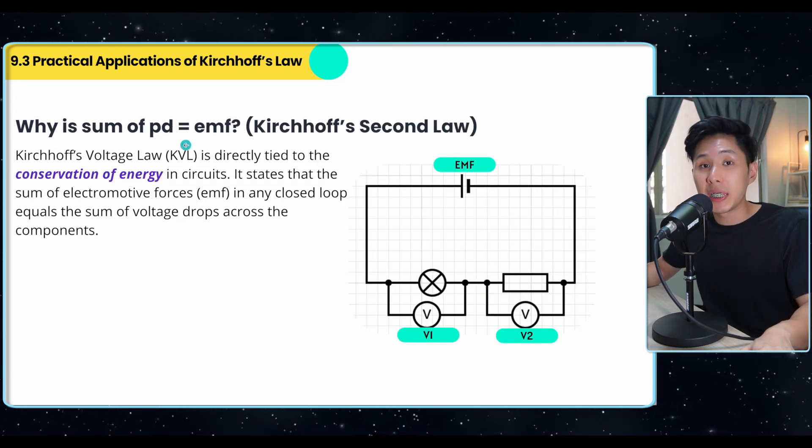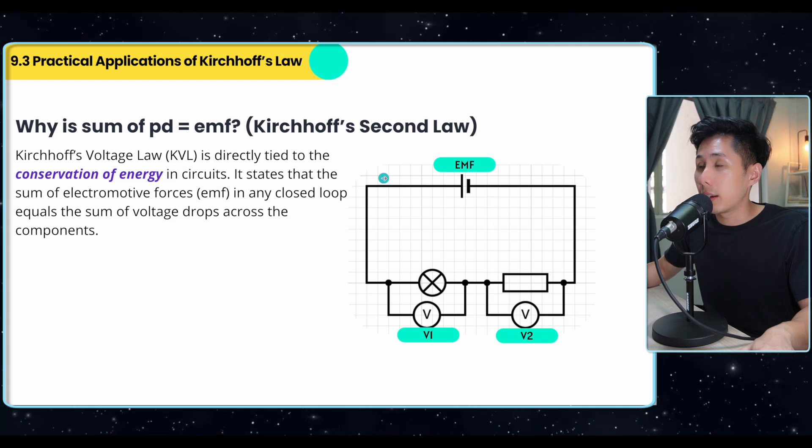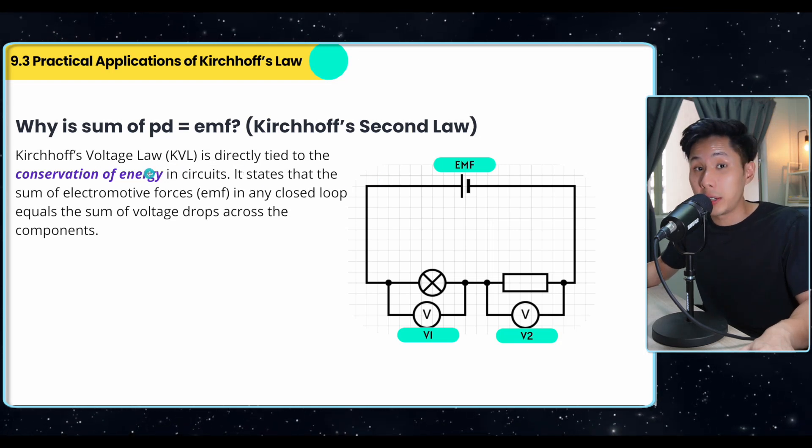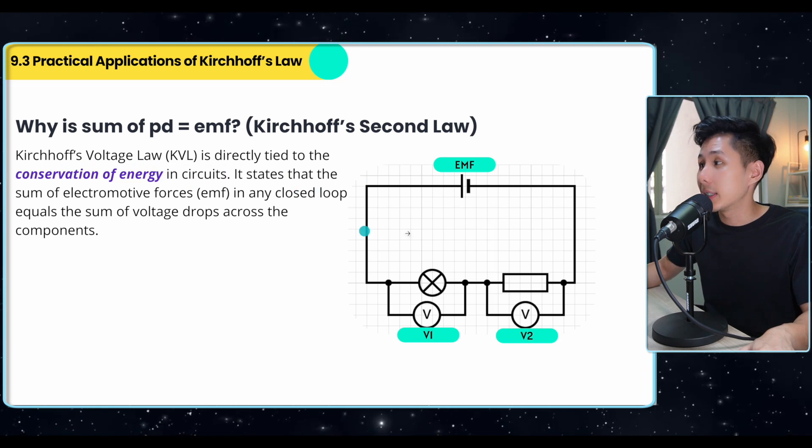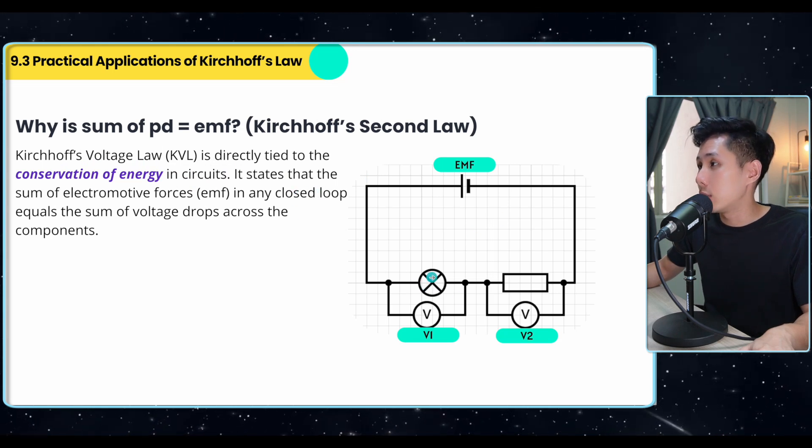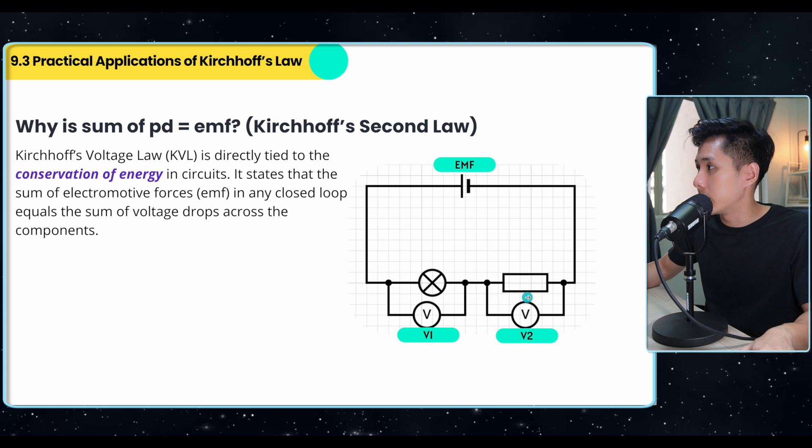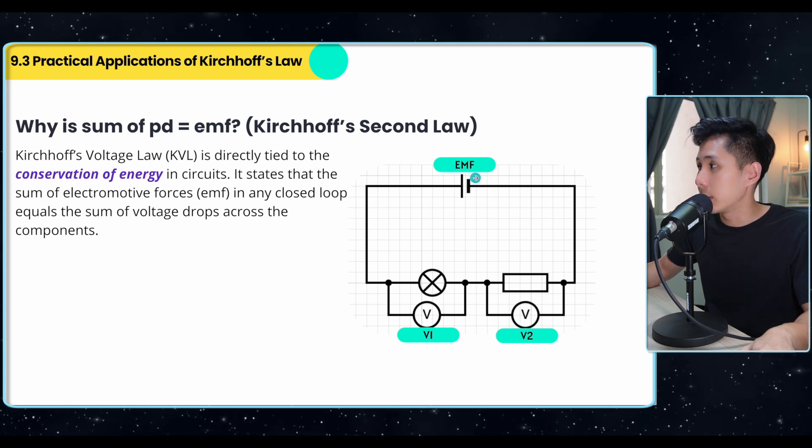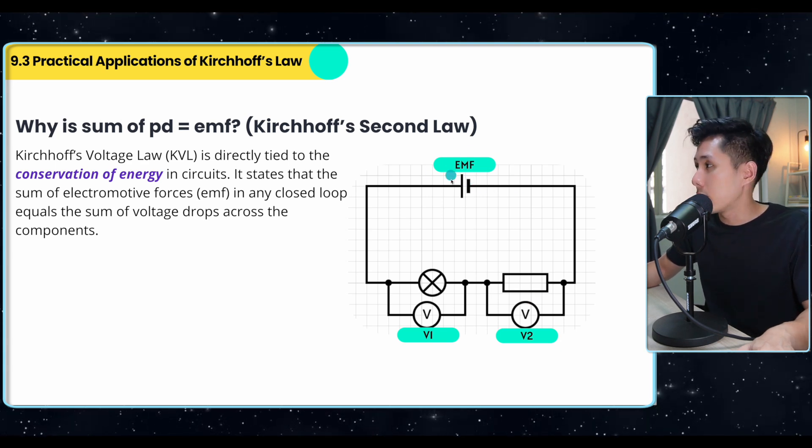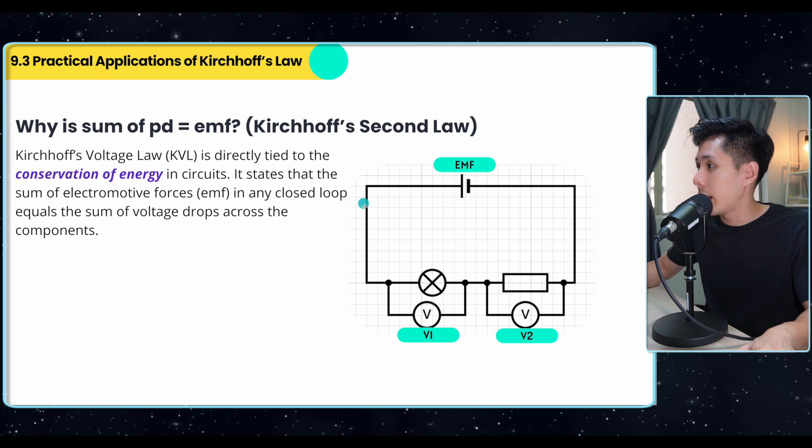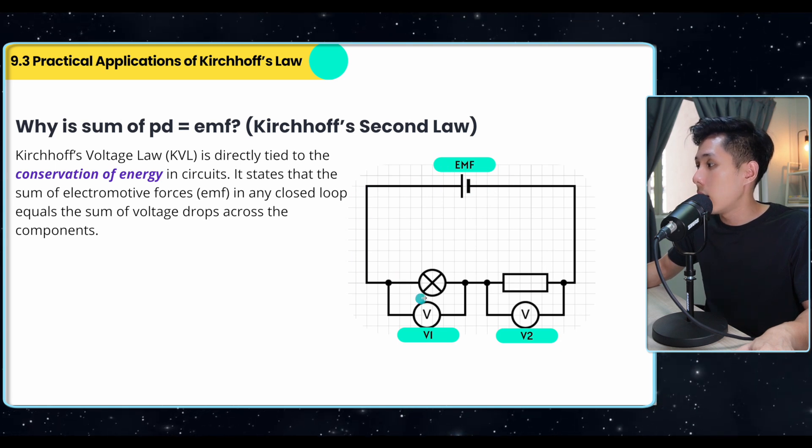Now, why is the sum of PD equal to EMF? Voltage law is directly tied to conservation of energy again, just like the first law. It states that the sum of voltage drops across each component is equal to the source here. Just imagine that the energy provided by EMF, as they cross through one component voltage drop...